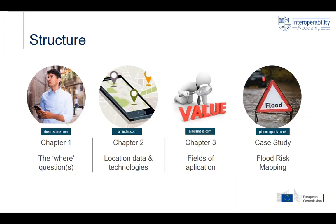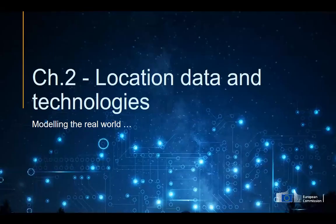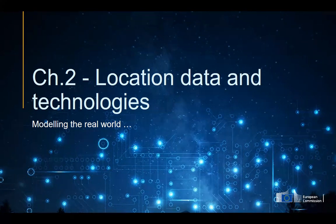Now we will go to chapter two, where we will zoom in and discuss location data and technologies. The core element and idea of location data is that we start from the real world — with the buildings, the streets, our environment — and try to model that in our computer. We use certain technologies for doing that, to manage the data and to use the data afterwards.